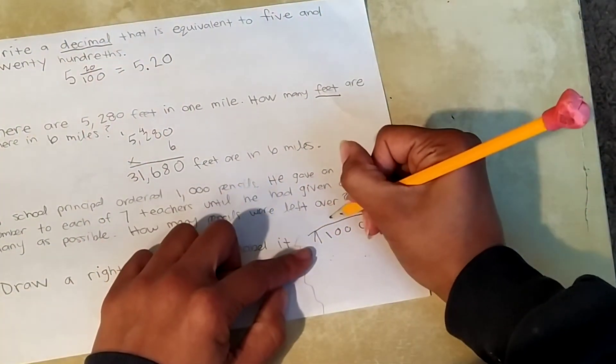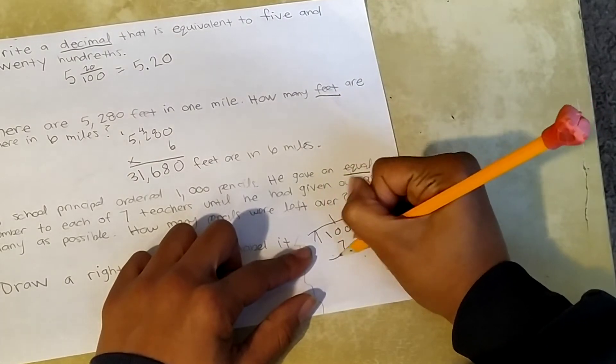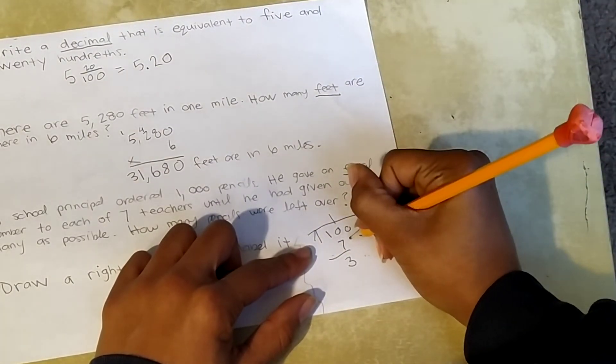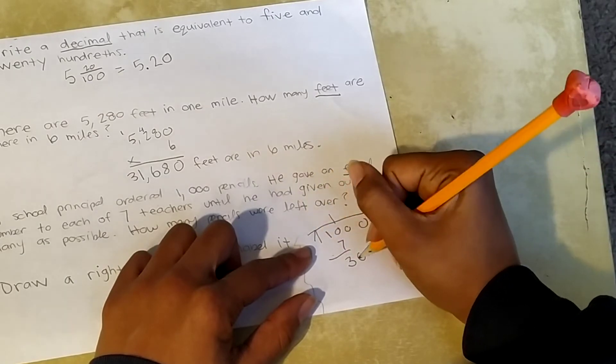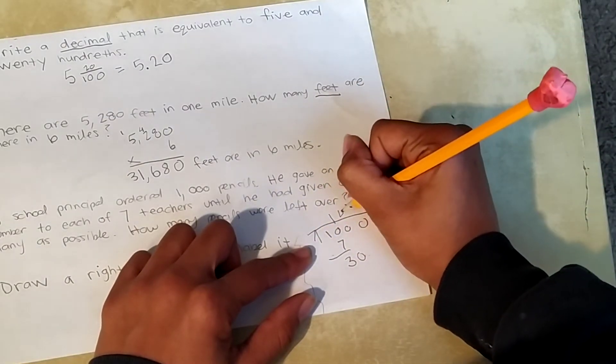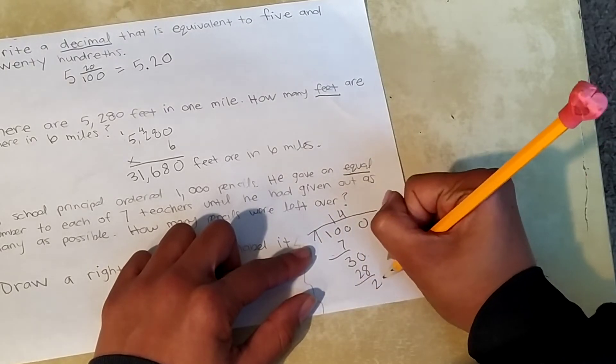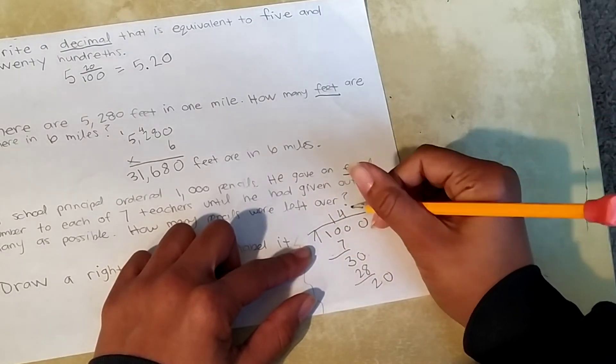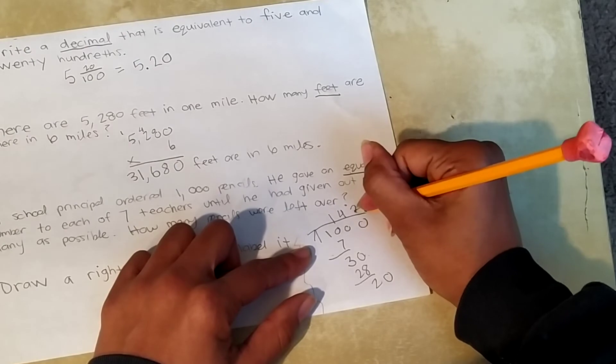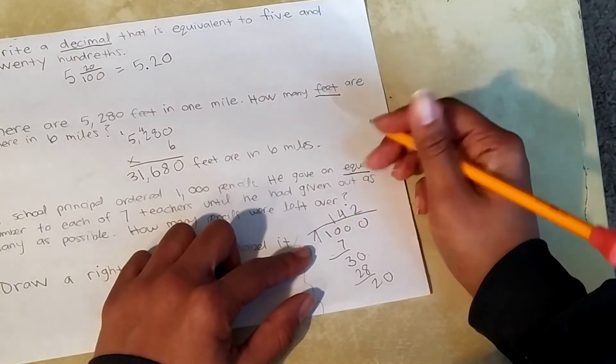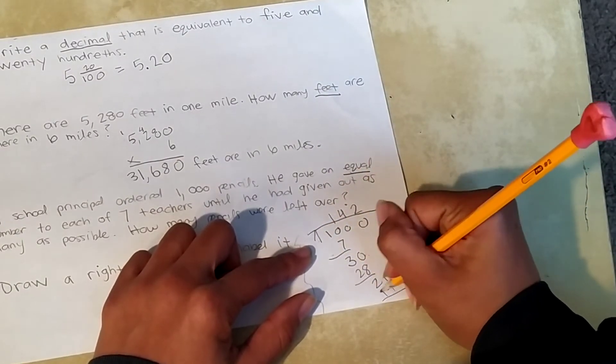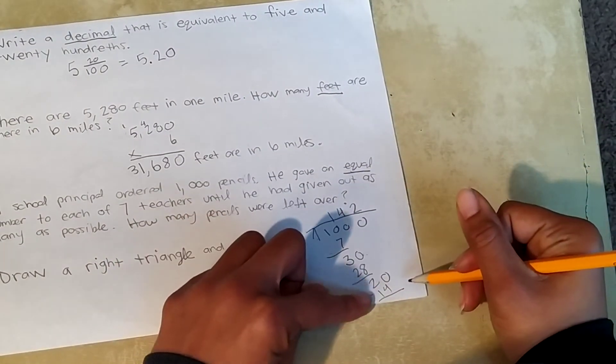Okay, we're going to do the division. Seven goes into 10 one time. That's a three. Three. Bring down your zero. Seven goes into 30, four times. 28. Bring down your zero. Seven goes into 20. Three. No, not quite. Two. Two times. Seven. 14. Okay, we see this here.